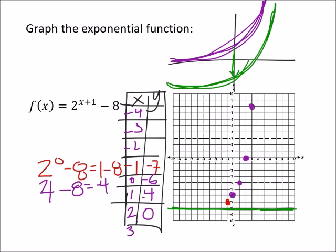What happens if we make these more negative? So 2 to the power of negative 2 plus 1 is 2 to the power of negative 1. That's 1 half minus 8, which would be a negative 7 and 1 half. So negative 2 and negative 7 and 1 half gives us this point.